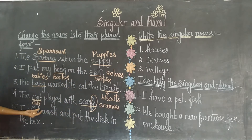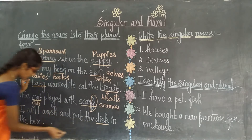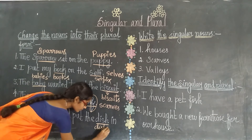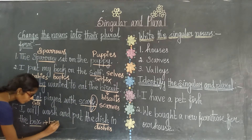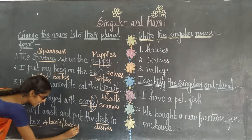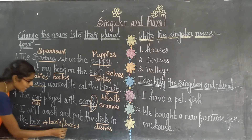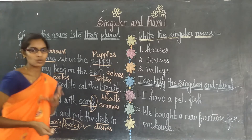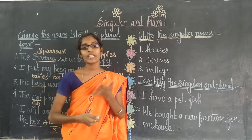The fifth example: 'I will wash and put the dish in the box.' Dish and box are the nouns. Dish changes to dishes. For box, I will give you two options — which one is right? Yes, the second one is right: boxes. If you want to know the rules on how to change a singular noun into a plural noun, please look at our previous videos on singular and plural.